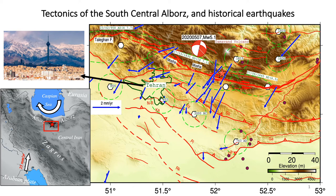Historical earthquakes are shown in green ellipses. Three of them cover the full length of the Mosha fault with earthquake magnitudes from 6.5 to 7.7. One event partially ruptured the Talaghan fault, which is the western continuation of the Mosha fault, and toward the east it reached the Firuscu fault, another active fault in the region.